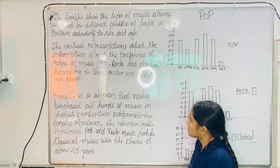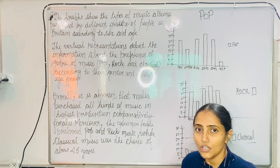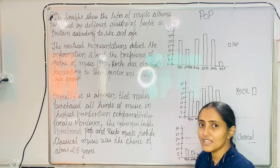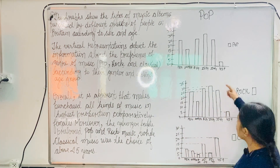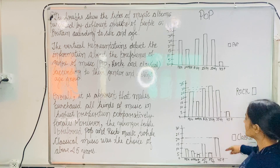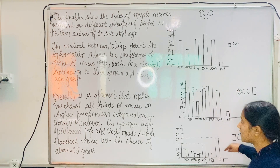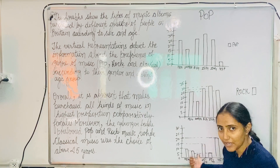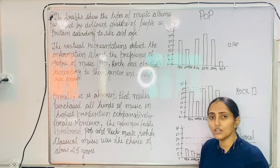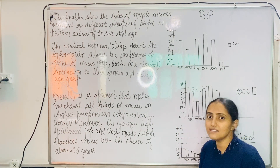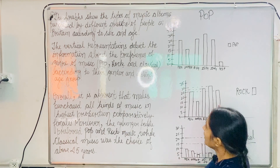So let us paraphrase the statement. Firstly, instead of 'bar graphs' we can say 'vertical representations.' So for these 3 graphs, we can write 'the vertical representations depict, elucidate, or illustrate the information.'